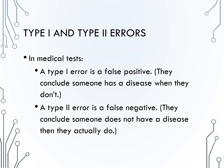Next, we will provide some examples of interpretations of errors in a few different contexts. In medical tests, for example, the null hypothesis is that someone is healthy, and the alternative is that they have the disease or are sick. A type 1 error, then, would be a false positive — if we conclude someone has the disease even though they don't. A type 2 error is a false negative, when we conclude someone does not have a disease when they actually do.